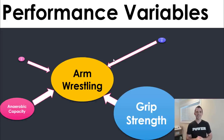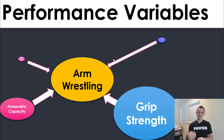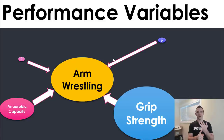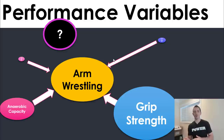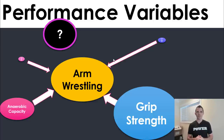Compare that exact same list to arm wrestling, and you see how those bubbles change. Aerobic capacity probably isn't that important for an arm wrestler, but grip strength is pretty damn important. So we're not only listing which variables matter, but how relatively important each one is. There are surely some that matter for tennis that we'd remove for arm wrestling and vice versa — you have to think through this stuff.